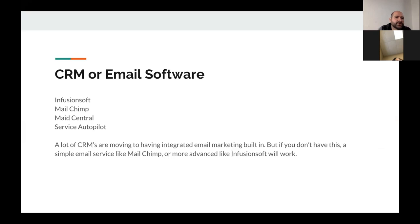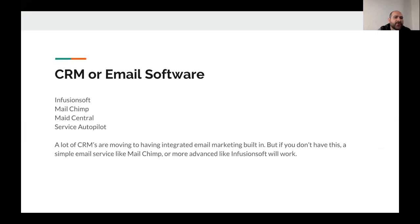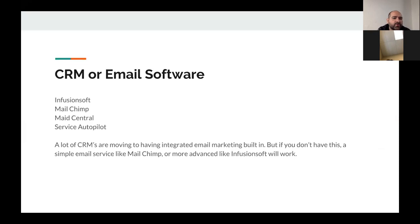The next thing you need is a CRM or email software. A lot of what you're using as scheduling software is starting to have the ability to do targeted emails. Service Autopilot does this. The software I use, Made Central, I can email directly from it. I still use Infusionsoft because I haven't fully embraced all the email campaign features in Made Central. But something like MailChimp, Constant Contact, or Infusionsoft would work just fine. I'm doing mine in Infusionsoft this year.